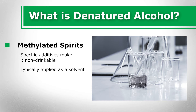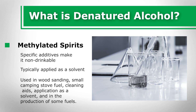Typically applied as a solvent, denatured alcohol is suitable for numerous application needs. Many forms contain approximately 10% methanol as the additive, rather than other common alternatives such as isopropyl alcohol, denatonium, methyl isobutyl ketone, and acetone. Denatured alcohol is used in wood sanding, small camping stove fuel, cleaning aids, application as a solvent, and in the production of some fuels.